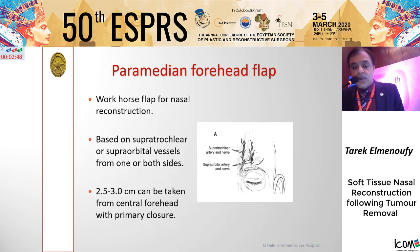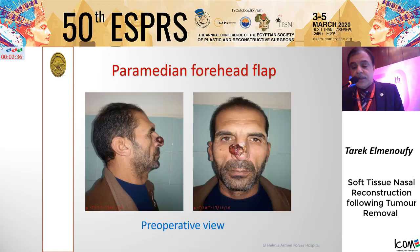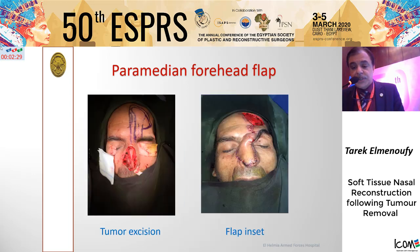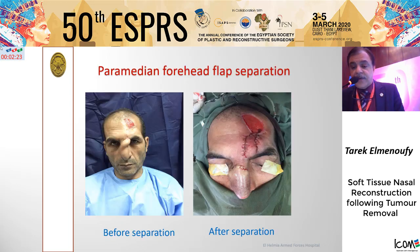The paramedian forehead flap is a workhorse flap for nasal reconstruction, based on the supratrochlear and supraorbital vessels. A width of around two to three centimeters can be taken from the central forehead, allowing primary closure. This case shows a larger tumor more than one and a half centimeters at the tip of the nose and dorsum. The tumor was excised with adequate safety margin, the forehead flap was designed and inset, and later the flap was divided, with the donor site left to heal by secondary intention.